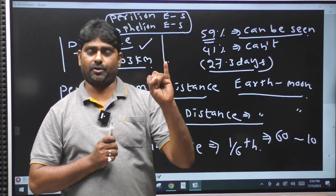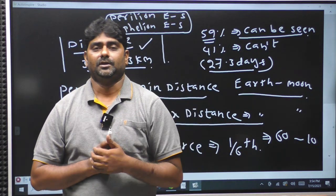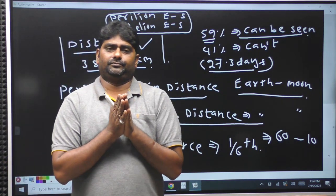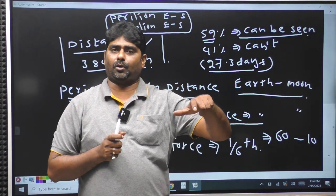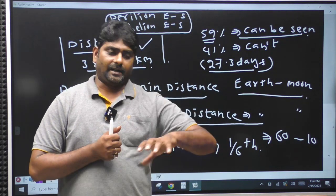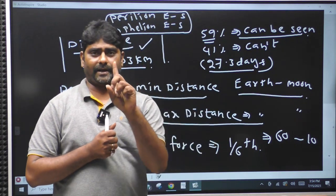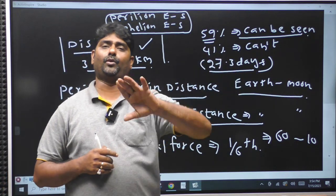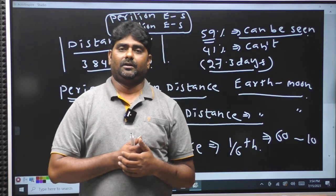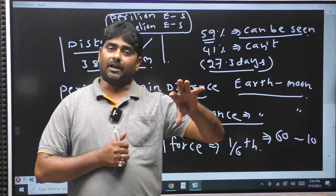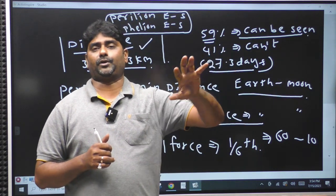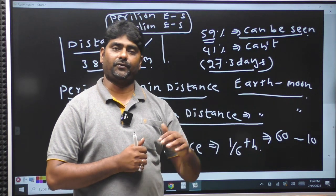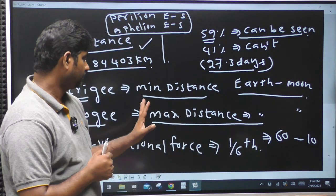One lunar day equals 14 Earth days. The mission has a module and a rover. The lander and rover have one lunar day — that is 14 days — to operate. Day time on the Moon is 14 days.